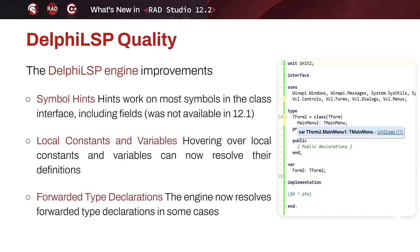For this version, 12.2, we had a lot on our hands with the 64-bit version of LSP, but we didn't want to leave any of these areas untouched. We have made a few improvements — for example, symbol hints will now work in the class interface, including fields. Hovering over local constants and variables will now resolve their definitions, and the language server will now also resolve forward type declarations, probably in most cases, but not in all cases at the moment.